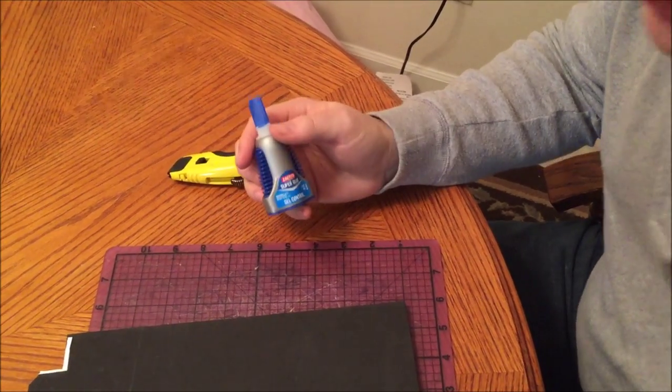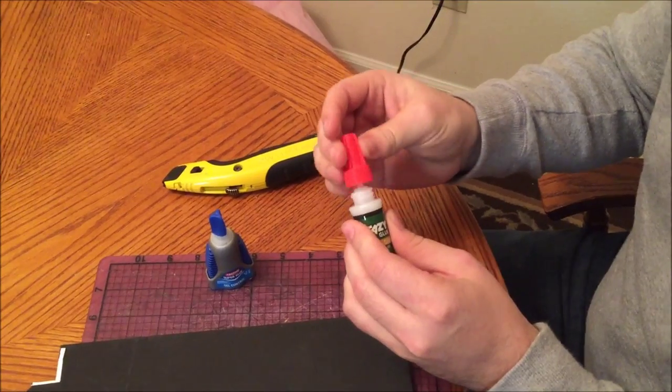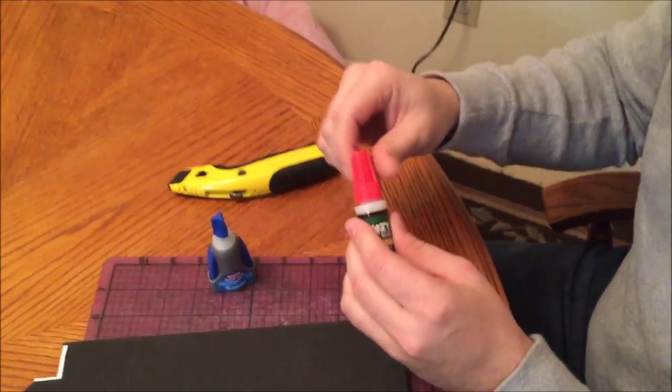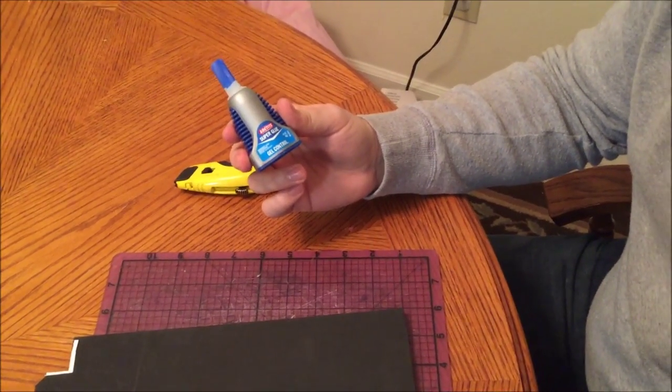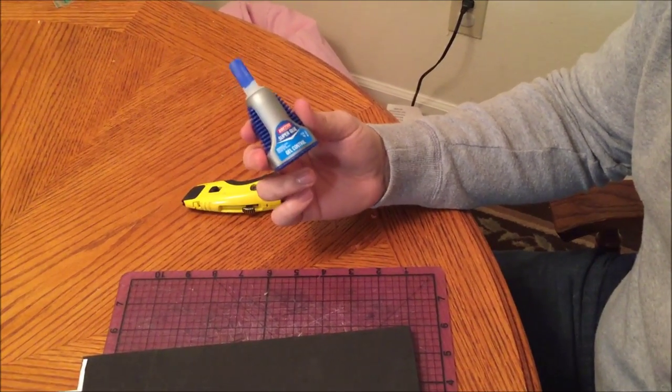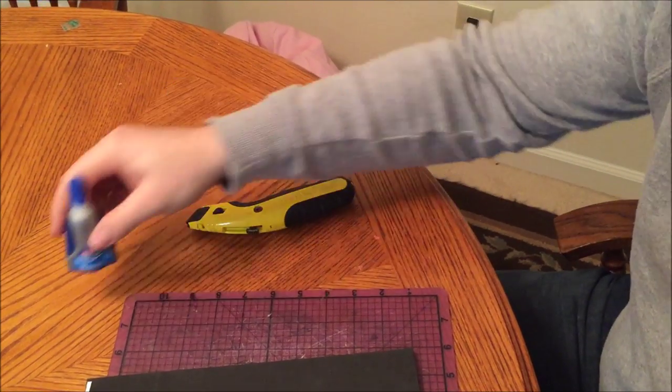Some superglue. You can use a couple different types. There are superglues that have brushes. Some people like to use the brushes to brush on a thin layer. Personally I prefer the gel just because it doesn't dry quite as fast, so it gives me a second to get the models where I want them.